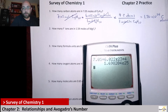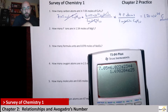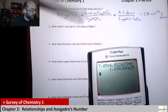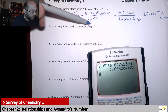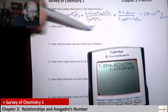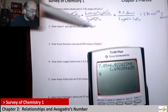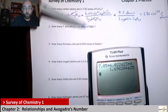Next up, it says how many fluoride ions are in 1.54 moles of magnesium fluoride? It's the same kind of idea — we can figure out how many formula units of magnesium fluoride are in that mole amount, and then we also see that there are two of these ions for every one formula unit.